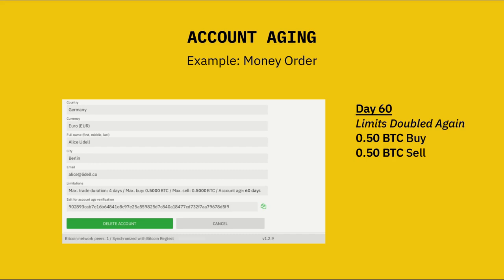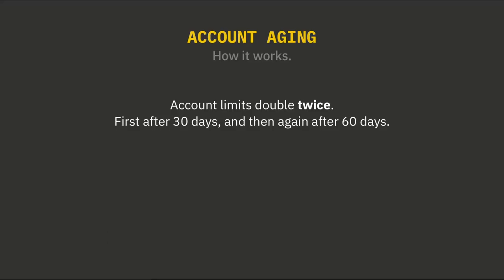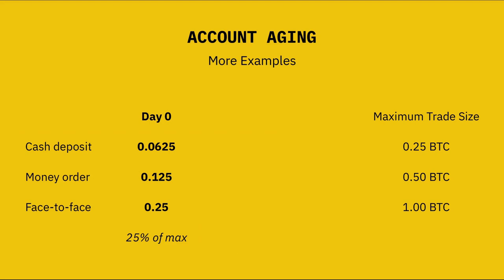So that's how account aging works. The limit you start with doubles twice — first after 30 days, and again after 60 days. Now there is one thing to note: that limit you start with varies by payment method, because different payment methods have different maximum trade sizes. So the amount that Bisq allows you to trade at one time with a cash deposit is lower than the amount you can trade with a money order or face-to-face. But the same aging dynamic applies.